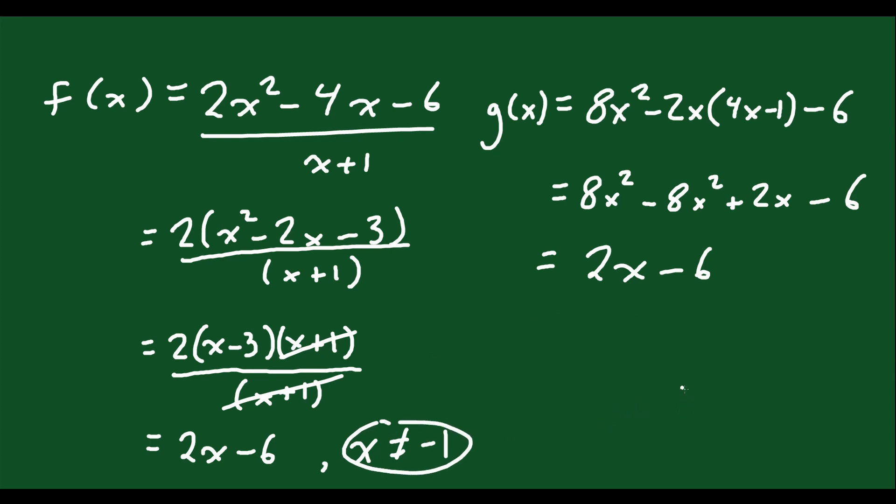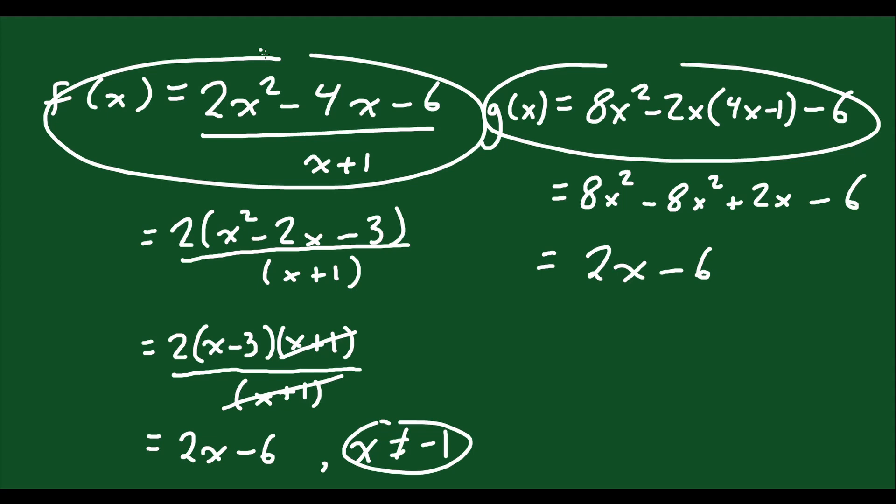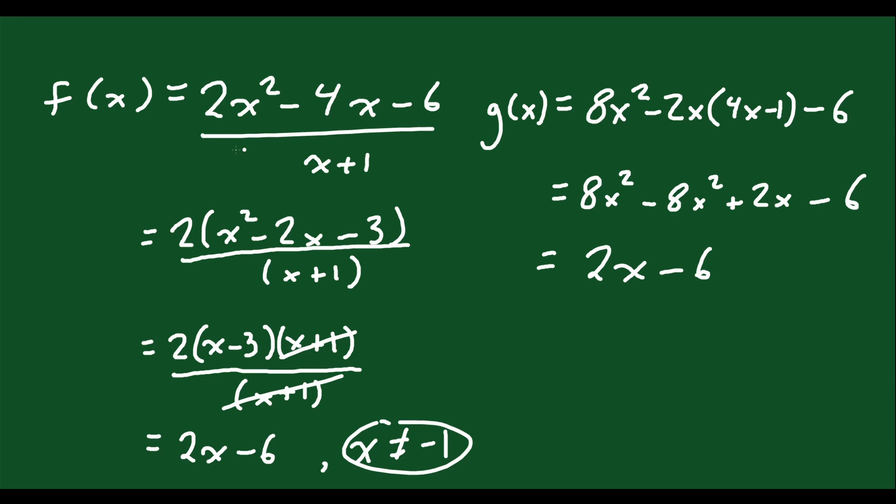Now, what does that mean? It means that for every value of x that you plug in to this equation and this equation, you will get the exact same answer for both, unless that x value you're plugging in is negative 1. If you plug negative 1 into f(x), so if you do f at negative 1, your answer is going to be undefined. We don't know the answer because it's divided by 0.